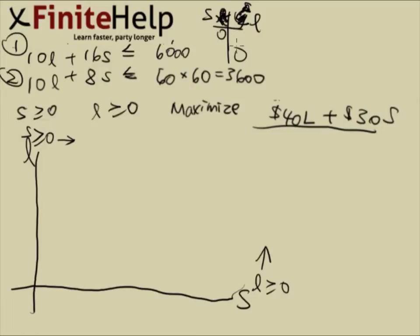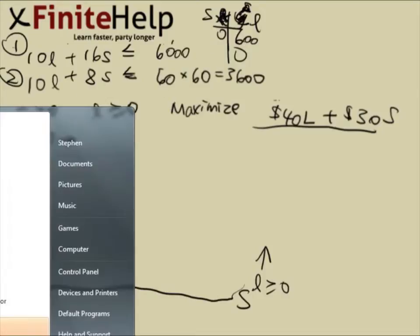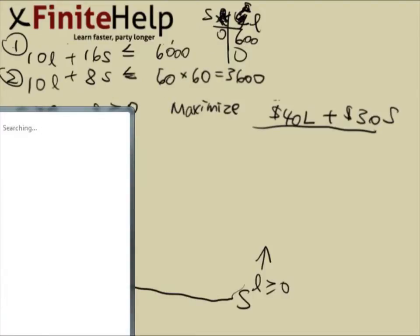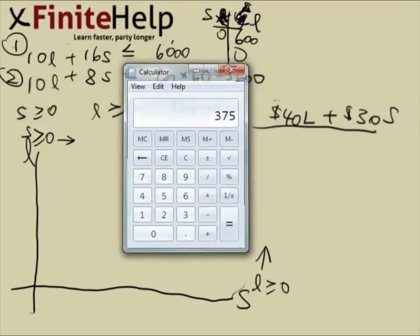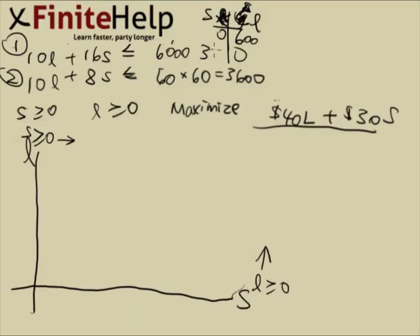When s is 0, l is, 10l is 6,000, so l is 600. And when l is 0, s is 6,000 over 16. Let's calculate what that is real quick. 6,000 over 16, 375, that's 375 here.